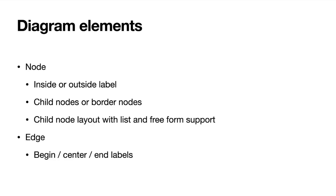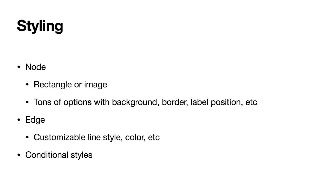For edges, you have fewer options, but one key configuration is labels — you can place a label at the beginning, end, center, or all three. In terms of styling, you have many options: rectangle or image for your node, background, border color, sizes, and label position. Most of these options can be configured using expressions, so the configuration can be dynamic depending on the object represented by the node.